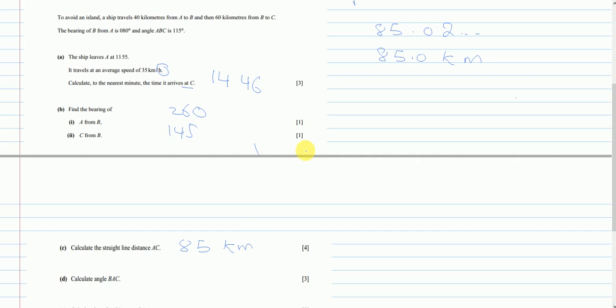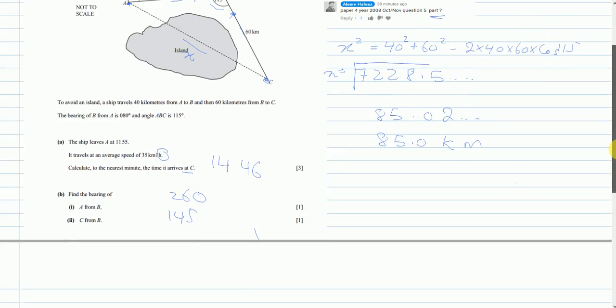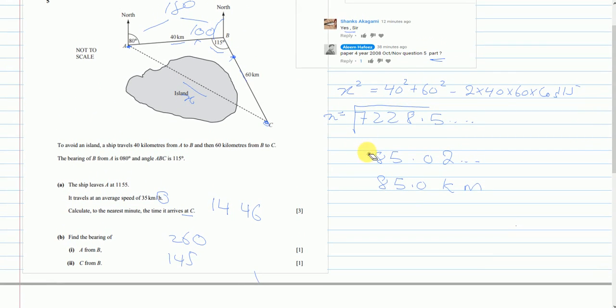Now for part D we have to calculate the angle BAC. Now for this one, this time we will have three sides we already have and we just have one angle and we are looking for another angle so at least we have two angles and two or more sides so two angles two sides is the sine formula. And another hint is that we already use the cosine formula so it's very likely that we will not use it again in the same question at least so this time we will use the sine formula.